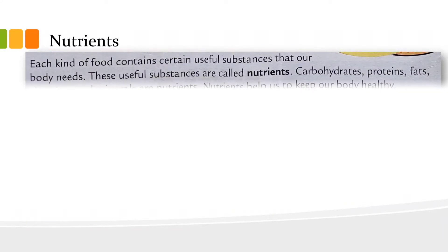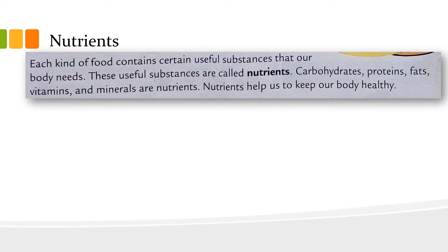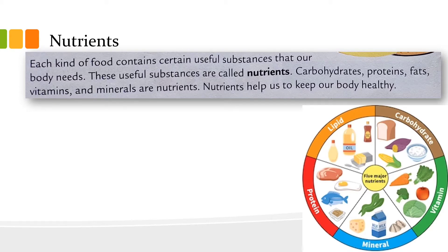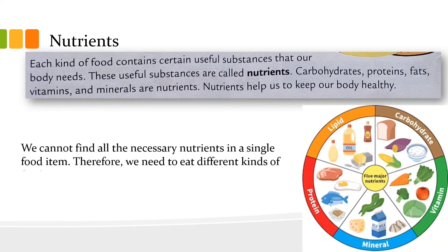Now let's talk about nutrients. What are nutrients? Each kind of food contains certain useful substances that our body needs. These substances are called nutrients. Carbohydrates, proteins, fats, vitamins, and minerals are the nutrients. You can see in the chart here: carbohydrate, vitamin, mineral, protein, and lipid — lipid is actually called fat — are the nutrients.